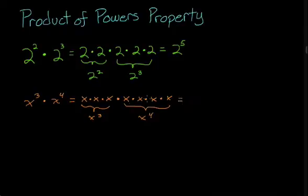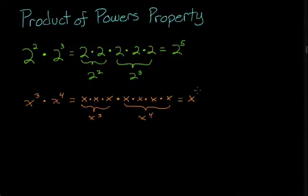What's another way of writing this? x times itself 3 times, and then x times itself 4 times, for a total of x multiplied by itself 7 times.